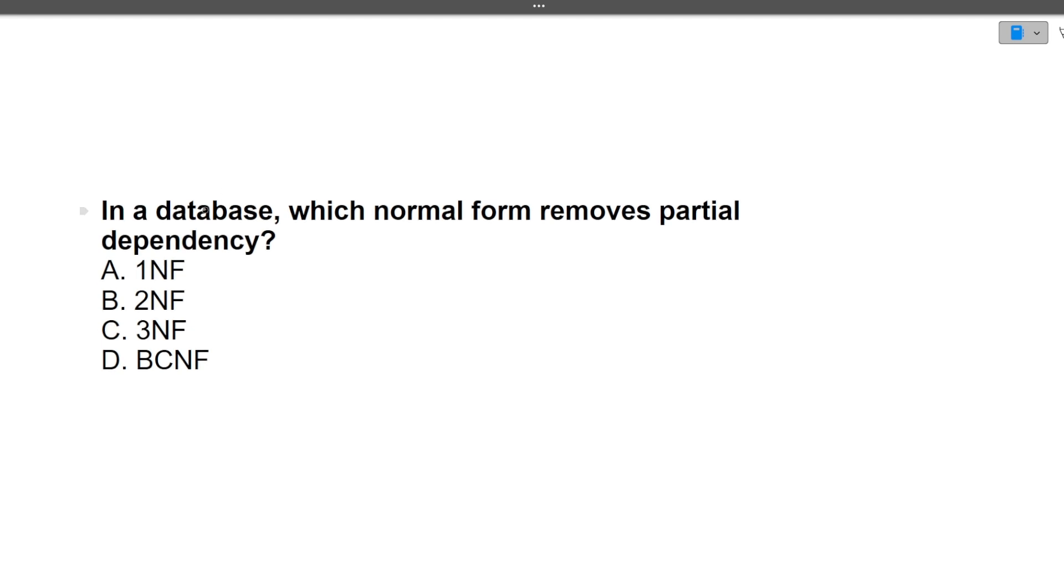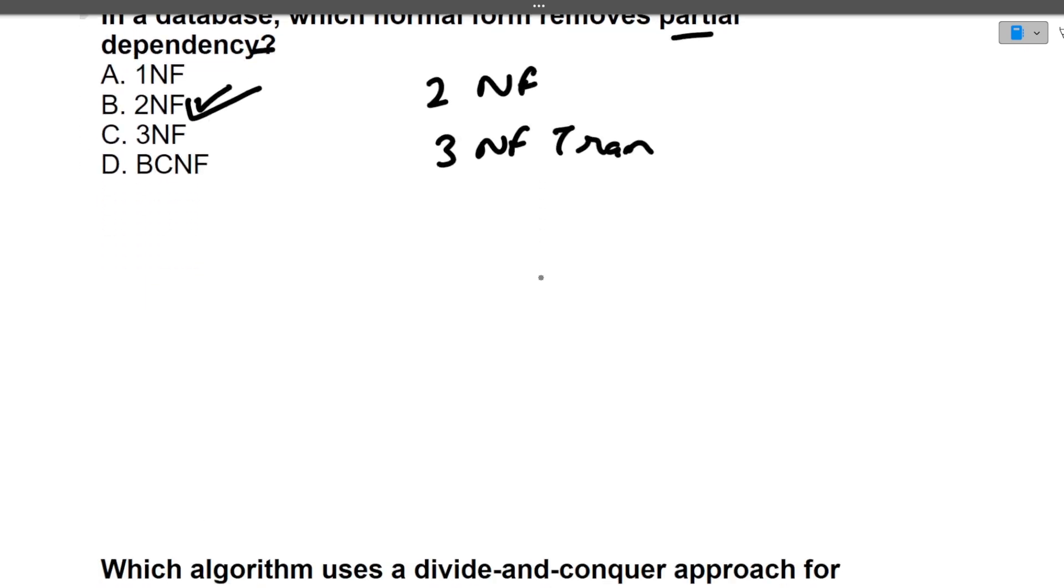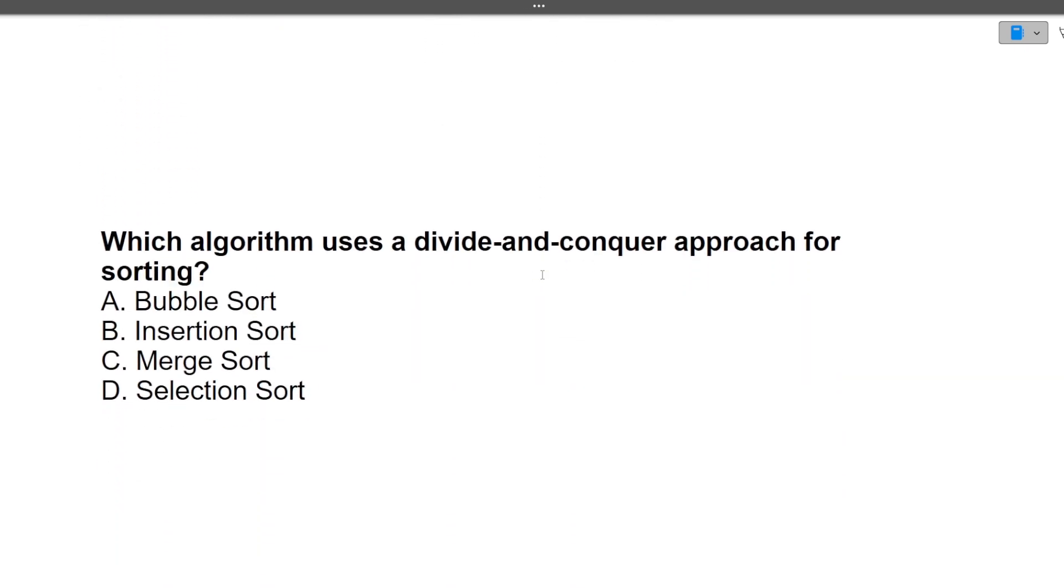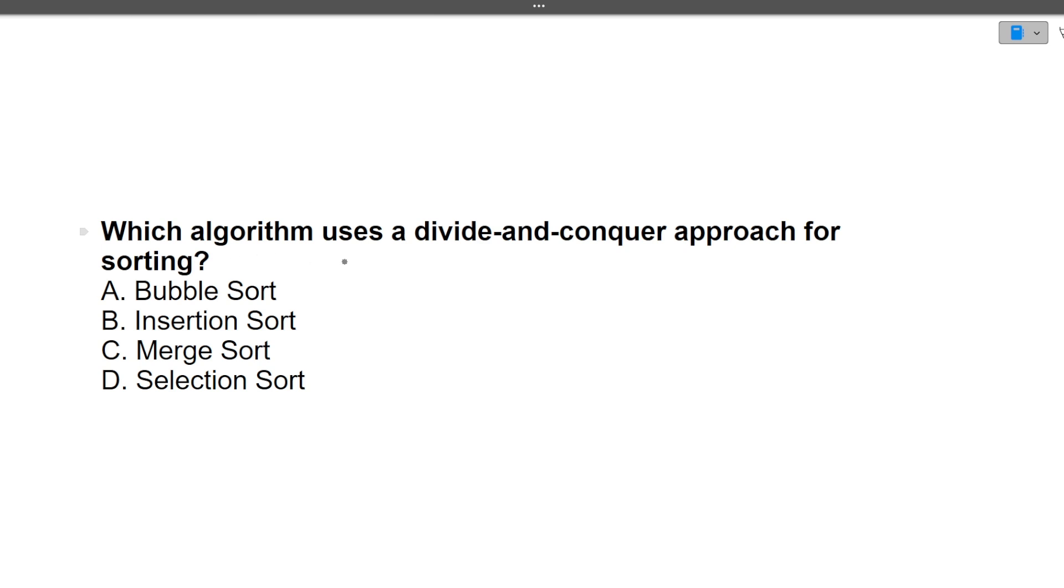Next is in a database which normal form removes partial dependency. So it is known as 2NF, second normal form. So 2NF removes partial dependency, 3NF removes transitive dependency. So I hope now the difference is clear to you between 1NF and 2NF and 3NF.